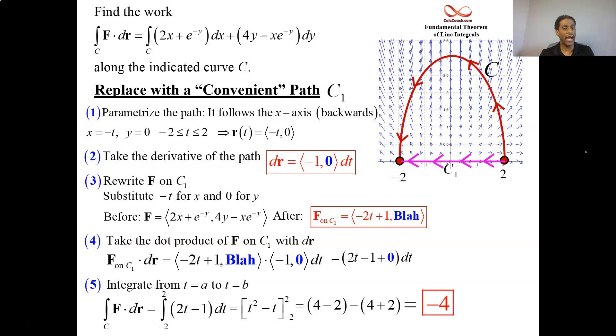So find the φ or pick a convenient path. Or you could always parameterize the path you're given. I don't recommend that though.